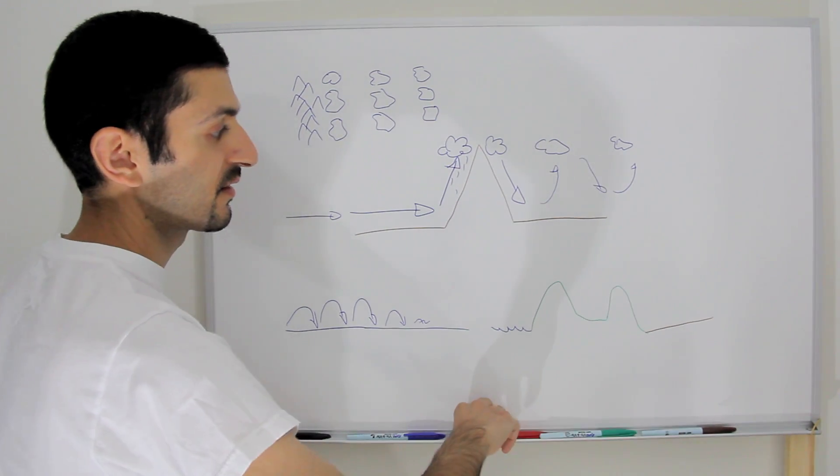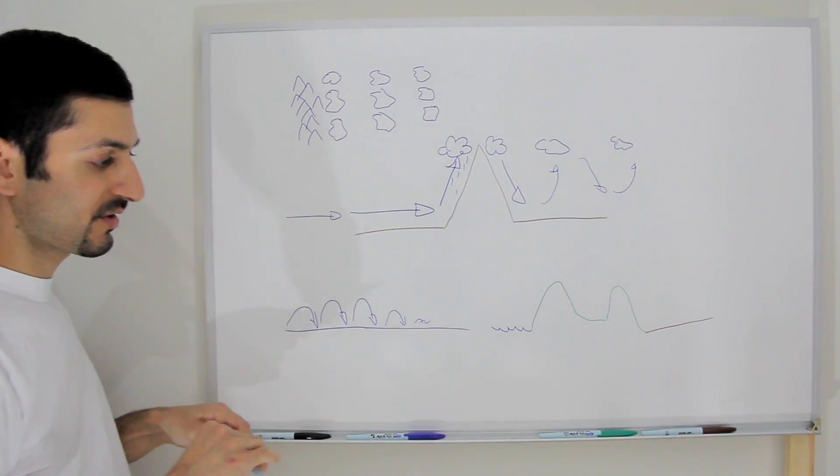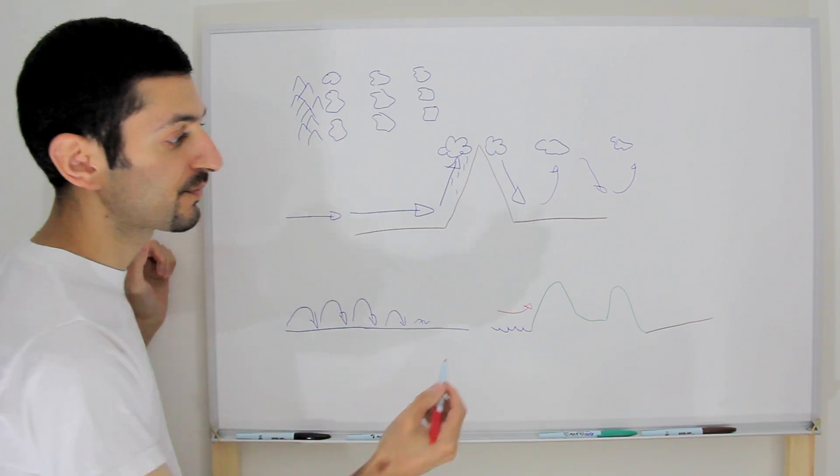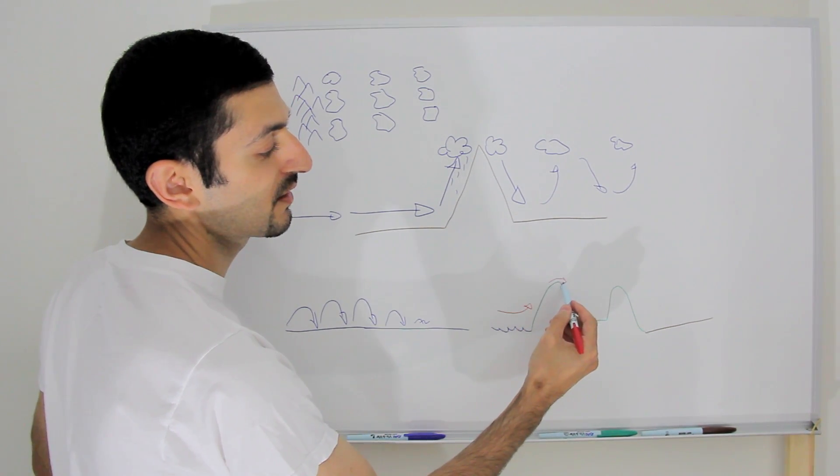So what happens is moisture coming off the sea rises when it hits the Lebanon mountain range and you have the nice snow-capped peaks.